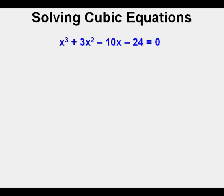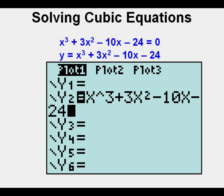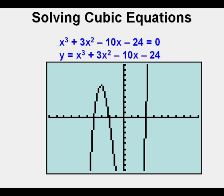We first change this equation into a function so we can graph it. We change the zero to y. Now we enter the cubic function y equals x cubed plus 3x squared minus 10x minus 24 in the y equals view. This symbol, the carrot or rooftop key, is the right side of the keypad just below the clear key. It means to the power of, in this case to the power of three. To graph, press graph or press zoom six to assure a standard window.